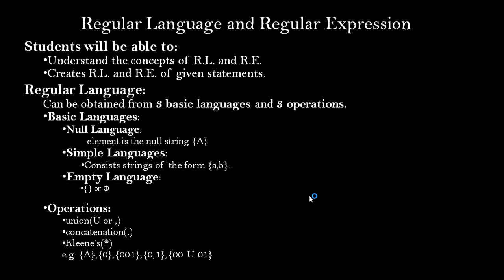The three basic languages are: first, the null language consisting of the null alphabet, denoted by epsilon; second, the simple language consisting of single alphabets like a, b, or combinations, or digits like 0, 1; and third, the empty language consisting of no elements, denoted by empty brackets or the symbol phi.